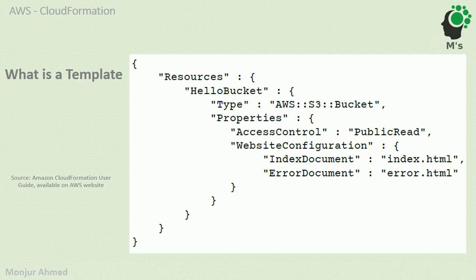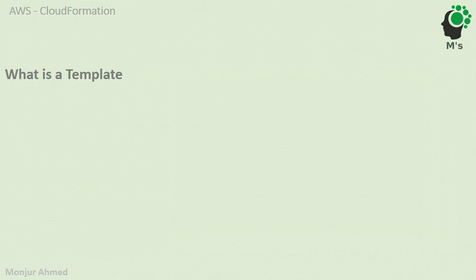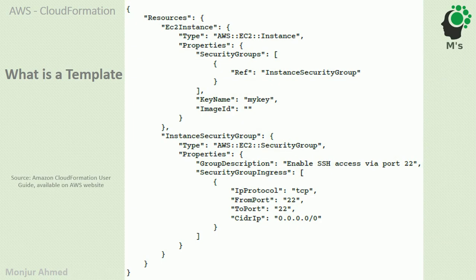The main point is that you declare a resource, give it a name, specify the type, and you can also define properties. There is a lot more to the story — you need to refer to the full CloudFormation User Guide reference manual on the AWS website. This is a more elaborated version of the previous template. Now let's look at another example to understand templates a bit further.